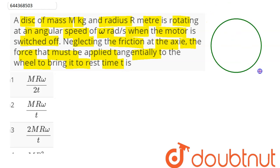Here we have our disk rotating about its center of mass. When it is being switched off, its initial omega is given as ω.